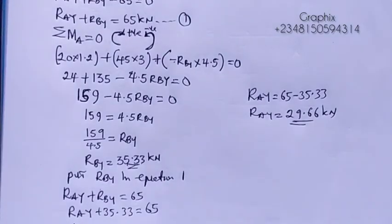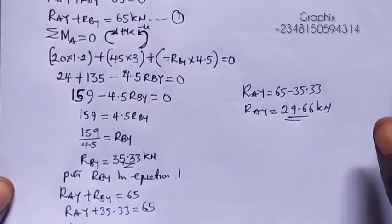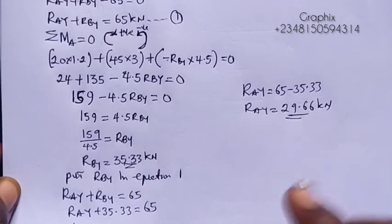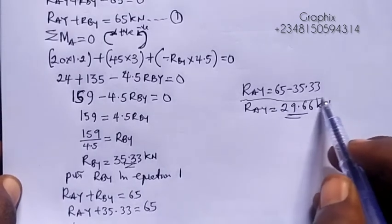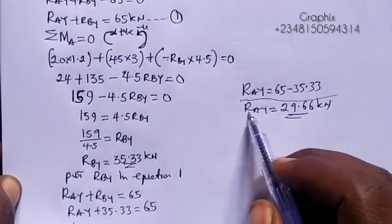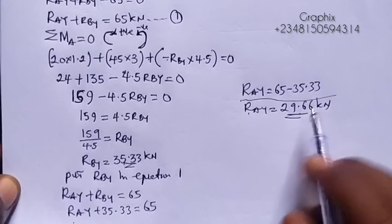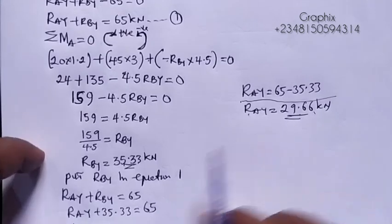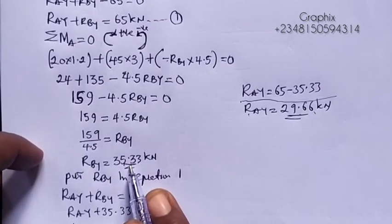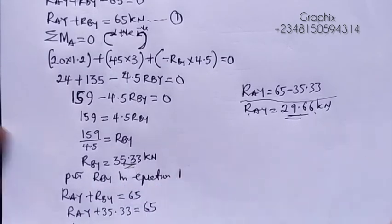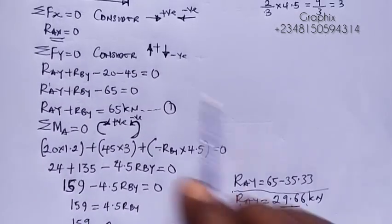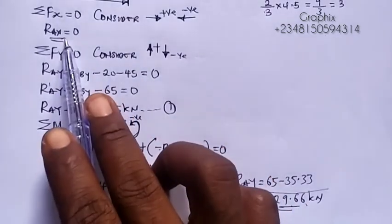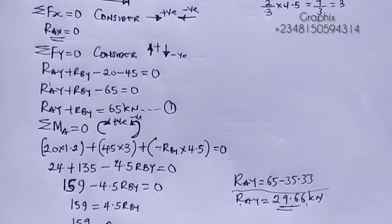So what we've seen so far: we have gotten RAY, one of the reactions, to be 29.67 kN, and RBY, the other reaction, to be 35.33 kN, and RAX equals zero. Those are my reactions. Thanks for watching.